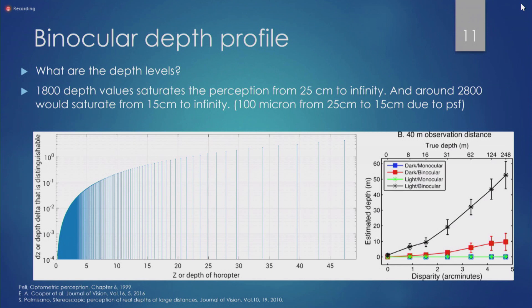The depth levels and what problems we should tackle are challenges my team has been thinking about a lot. The graph on the right shows how this varies with distance. With monocular vision — one eye — depth perception degrades badly as distance increases. This also varies between dark and brighter areas.